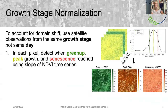To account for this domain shift, we propose the idea of growth stage normalization, in which we use satellite observation inputs from the same growth stage rather than the same day, as is traditionally done. The first step in growth stage normalization is to detect these growth stages in the NDVI time series. Based on the slope of the NDVI time series curve, or the rate that the NDVI is changing, we detect the day of the year when green up, peak growth, and senescence are likely taking place. This gives us three dates for every pixel, shown here as the day of the year.